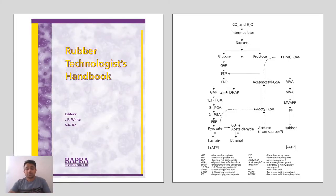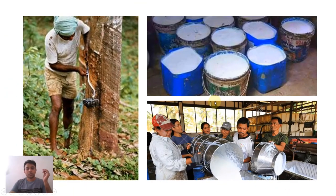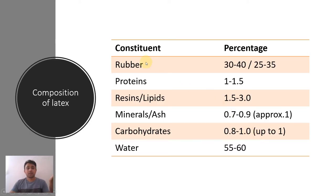Natural rubber is produced inside plants starting from carbon dioxide and water, following the photosynthetic route. We can also see how natural rubber is tapped from Hevea brasiliensis trees, how it is collected, and the initial stages of the factory process to produce rubber sheets.